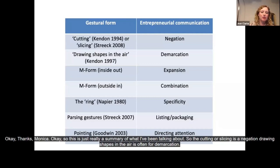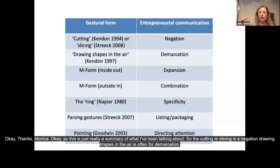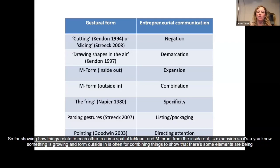To summarise: cutting or slicing is a negation. Drawing shapes in the air is for demarcation — showing how things relate to each other in a spatial tableau. M form from inside out is expansion, showing something is growing. M form outside in is for combining things to show elements are being combined in a product or idea. The ring or precision grip is for specificity. Parsing gestures are for listing or packaging. And pointing is for directing attention.